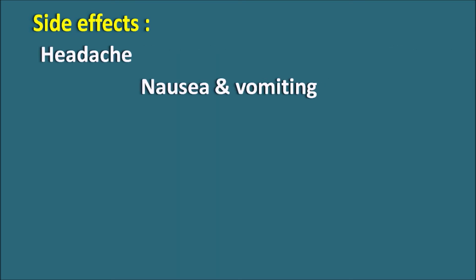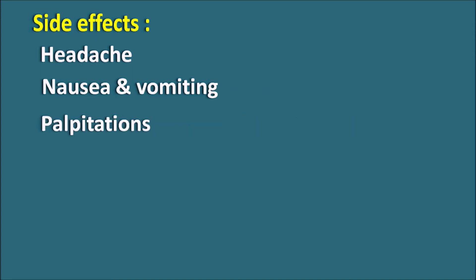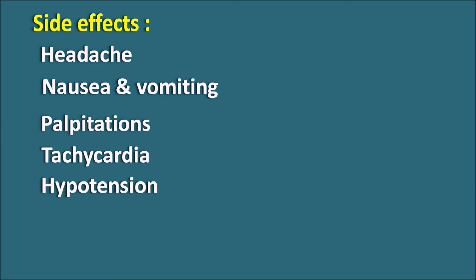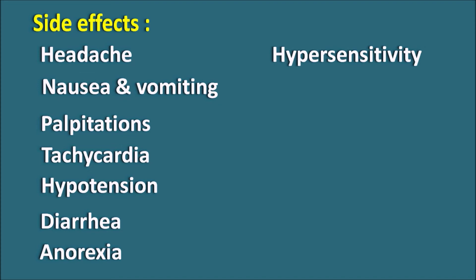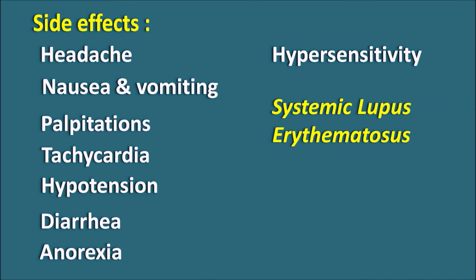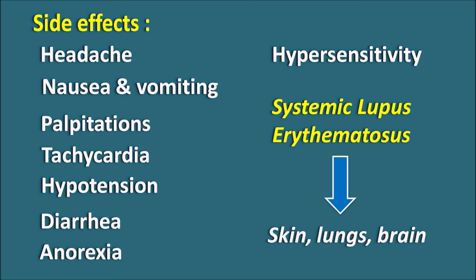The side effects of hydralazine include those related to vasodilatory reactions and those related to cardiac and sympathetic stimulation. It can produce headache, nausea and vomiting, as well as palpitations. By activation of the heart, it can produce palpitations, awareness of heartbeat, and tachycardia. Because of vasodilatation, it can produce hypotension, diarrhea, anorexia, and loss of appetite. This drug can also produce hypersensitivity reactions like skin rashes. An important serious side effect is systemic lupus erythematosus (SLE), which is an immune reaction affecting the skin, lungs, brain, and other organs. This fatal condition must be carefully monitored, and if a patient develops SLE, the drug should be avoided.